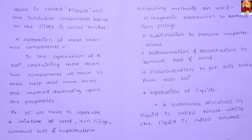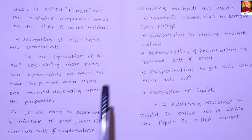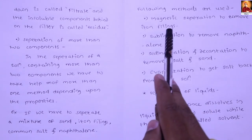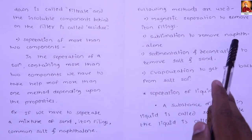In the separation of solutions containing more than two components, several separating methods are used. For example, in a mixture of sand, iron filings, common salt, and naphthalene: iron filings are removed by magnetic separation, naphthalene is removed by sublimation.